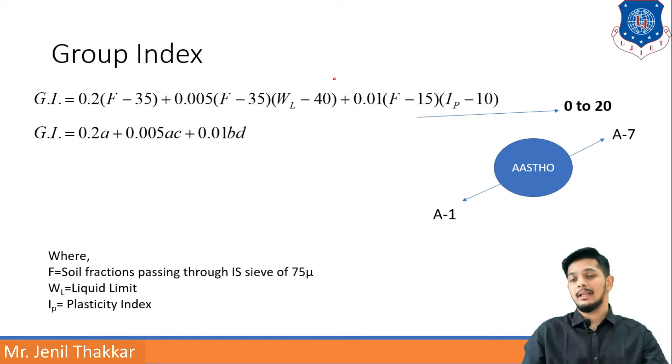Group index has a formula: GI = 0.2(F - 35) + 0.005(F - 35)(WL - 40) + 0.01(F - 15)(IP - 10). This formula has three things: F, WL, and IP.